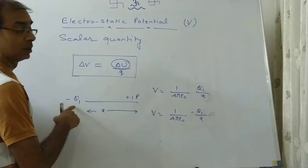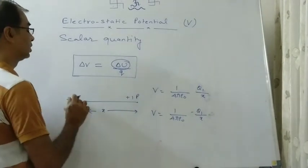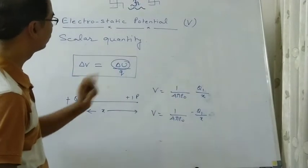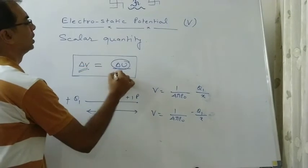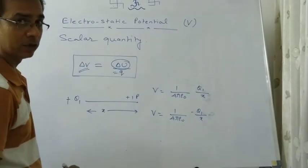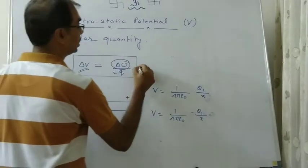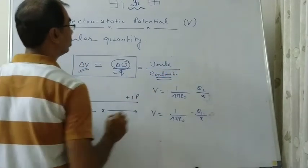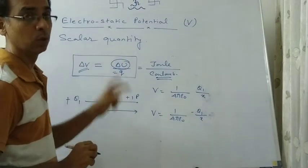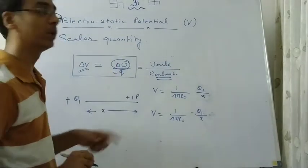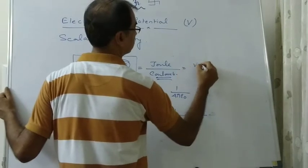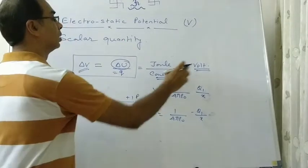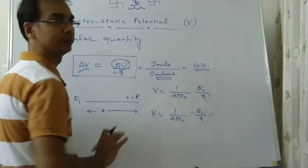If Q is negative, then potential will be negative: V equals 1 by 4 pi epsilon naught times minus Q by x. Just like potential energy, potential can be positive as well as negative. If the charge is negative it attracts the test charge — potential is negative. If the charge is positive it repels the test charge — potential is positive. From delta V equals delta U by Q, another unit of potential is joule per coulomb. One joule per coulomb is actually one volt. Both units need to be remembered.